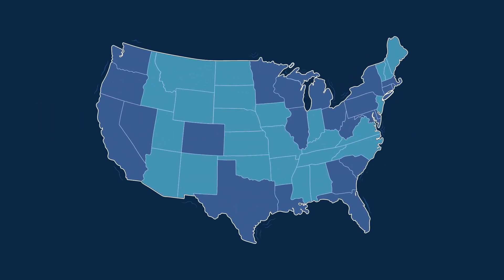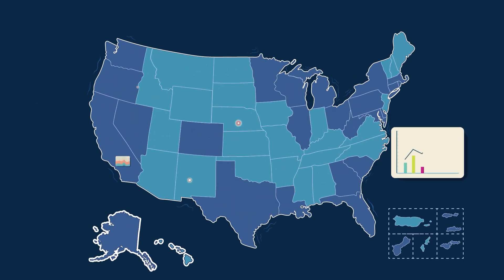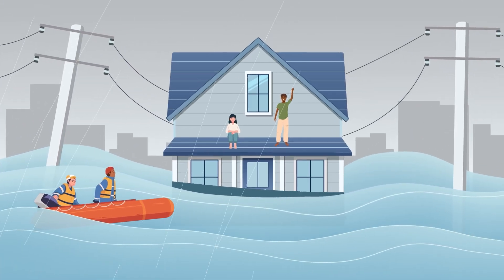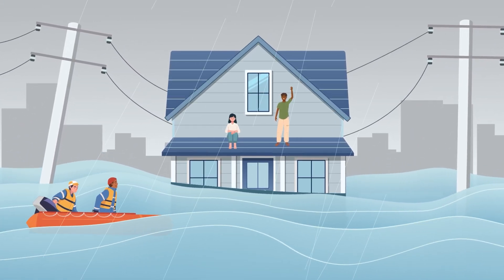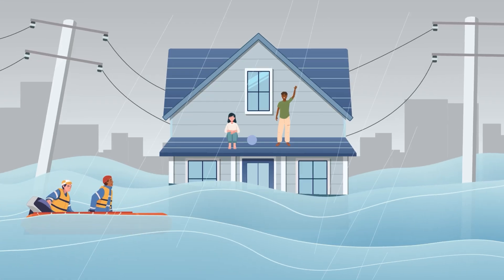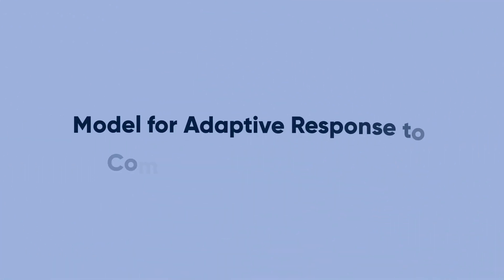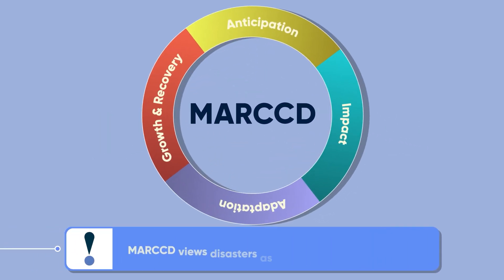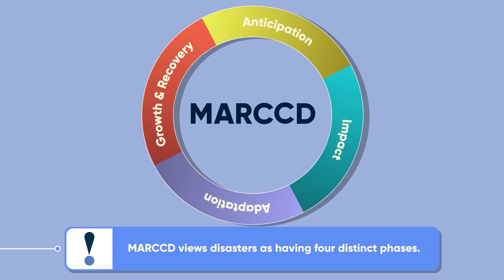The disaster landscape is changing. Disasters are becoming more common and repetitive, and the underlying issues that contribute to them are worsening. The Model for Adaptive Response to Complex Cyclical Disasters, or MARC-D, takes this new reality into account. MARC-D views disasters as having four distinct phases.